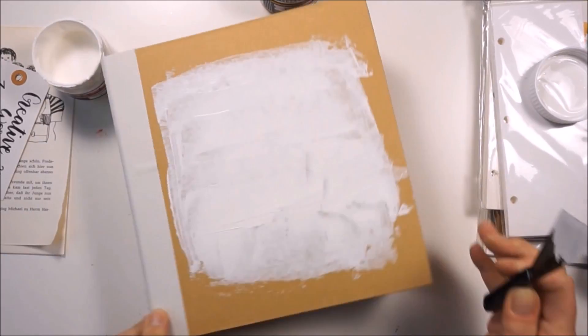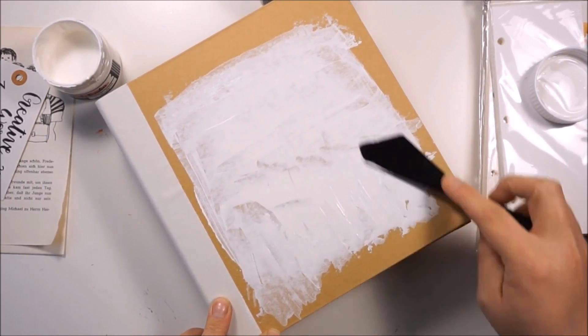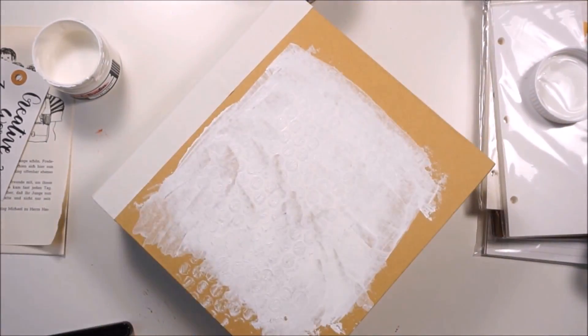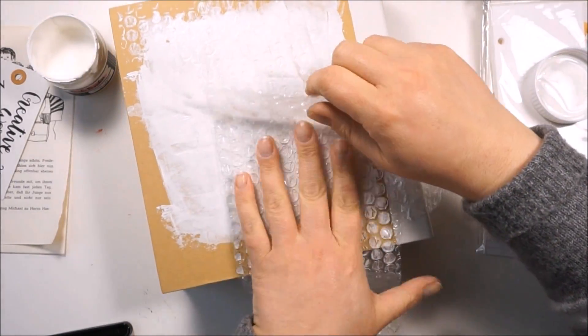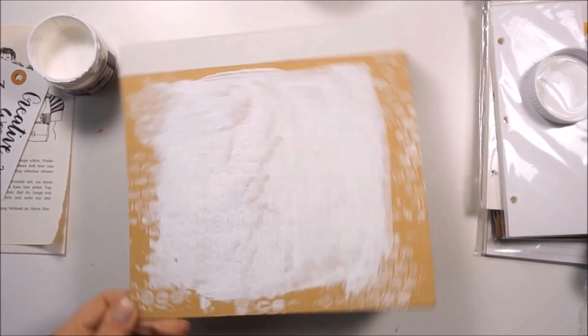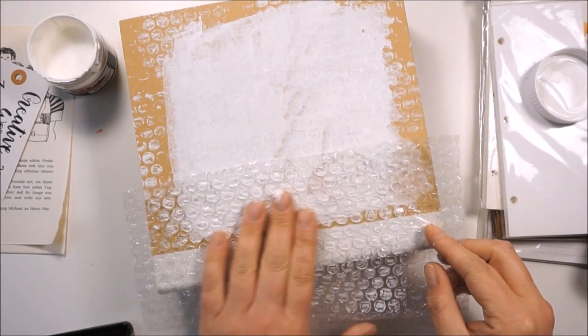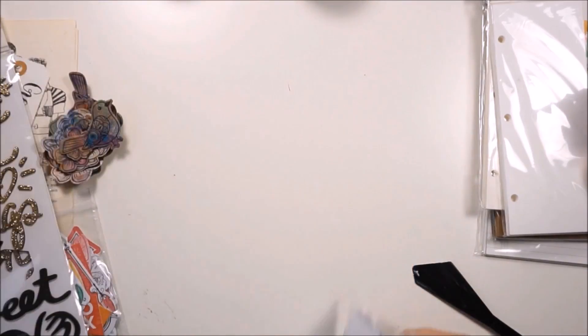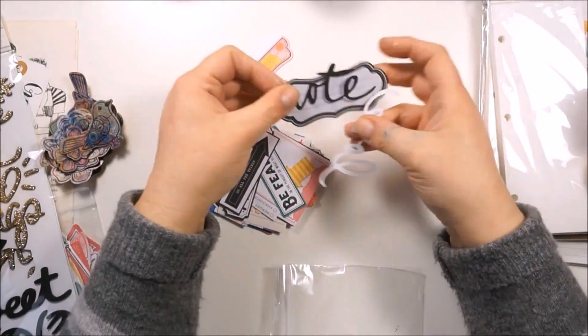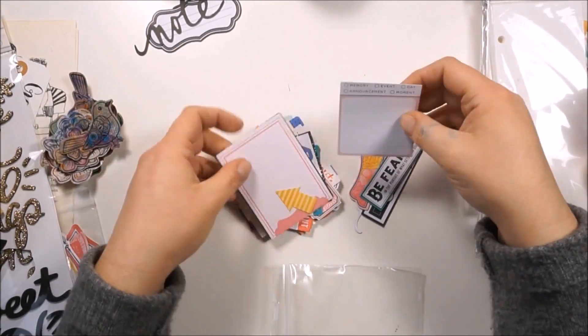I will grab some bubble wrap to stamp the gesso. You can see what I mean, I'm just pressing down the bubble wrap onto the wet gesso and just use the gesso on the foil to stamp the image.